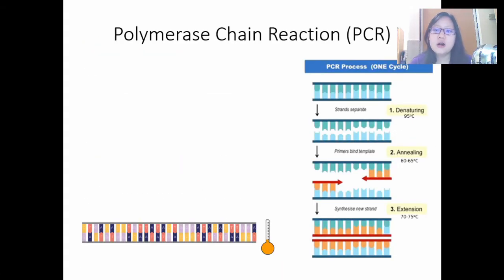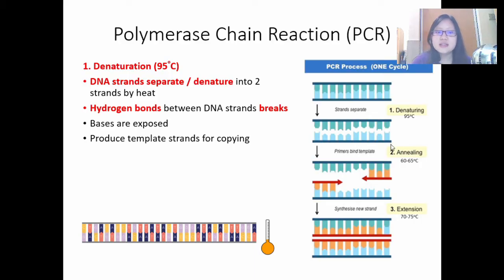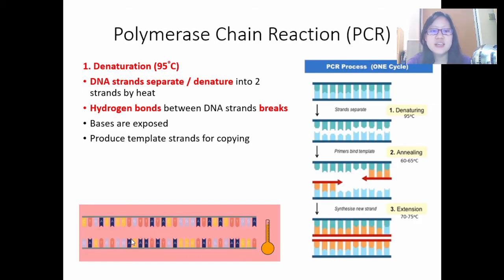The process of PCR has three stages. Number one is the denaturing stage. This is where the strands separate — what we refer to as DNA denaturation, meaning the hydrogen bonds break and the DNA strands separate, so the bases are therefore exposed. These two strands produce template strands for copying. You can see how the DNA strand has separated here. This occurs at high temperatures — 95 degrees. Everything is placed into a PCR tube and then into the thermocycler, and our enzyme cannot denature, which is why we need Taq polymerase to withstand this heat at 95 degrees.